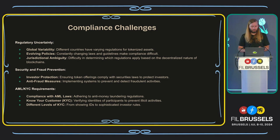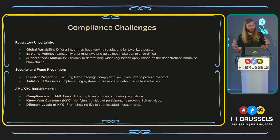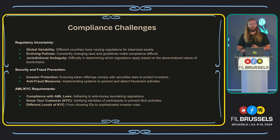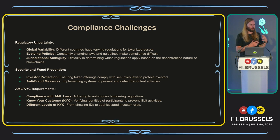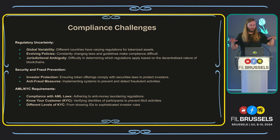Regulatory uncertainty and global viability: different countries have varying regulations on tokenized assets. How do we get a regulatory framework that is global, allowing ease of transition of ownership in a way that makes risk-averse people comfortable? Everything is continually changing across governments — that's another compliance challenge. If you tokenize something today, you must pay attention to the governments that control the jurisdictions of both the tokenized asset and its owners to make sure things aren't changing under you, because a previously compliant asset could become non-compliant.